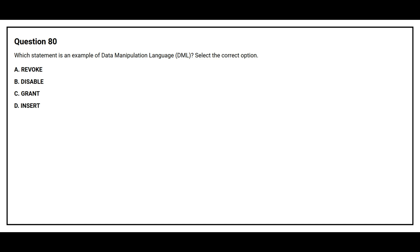Question number 80. Which statement is an example of data manipulation language (DML)? Select the correct option. Option A: Revoke. Option B: Disable. Option C: Grant. Option D: Insert.